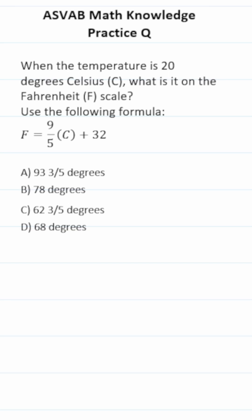This math knowledge practice test question for the ASVAB and PyCat says, when the temperature is 20 degrees Celsius, what is it on the Fahrenheit scale? Use the following formula: F equals 9 over 5 times Celsius plus 32.